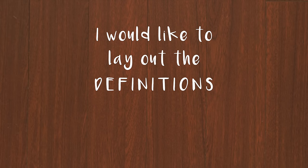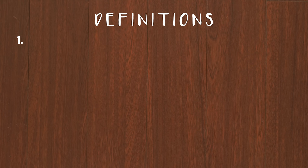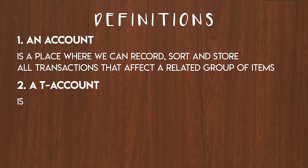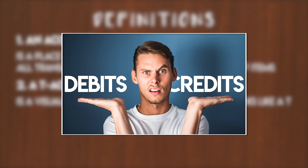To kick things off I would like to lay out the definitions of some important terms that will crop up throughout this video. First, what is an account? An account is a place where we can record, sort and store all transactions that affect a related group of items. A T-account is a visual representation of an account. It is called a T-account simply because it looks like a T, so that we can easily distinguish between all of the debits and credits that impact it. If you're unsure what debits and credits are, you might need to pause and watch the video I posted last week. You'll find a link to it in the description below.